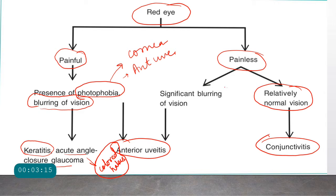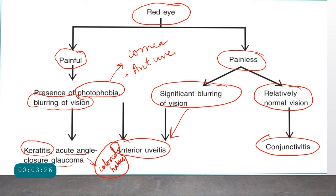Acute angle closure glaucoma presents with raised IOP and a shallow anterior chamber, causing red eye with significant pain and photophobia. A distinguishing symptom of acute angle closure glaucoma is the presence of colored halos. Significant blurring of vision is also present in anterior uveitis due to keratic precipitates (KPs) on the corneal endothelium. Note that chronic anterior uveitis can sometimes be painless.